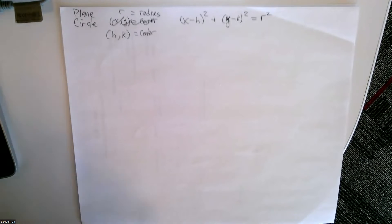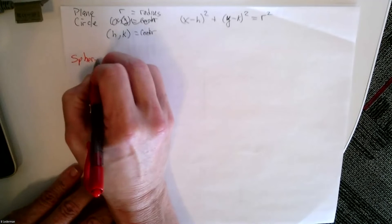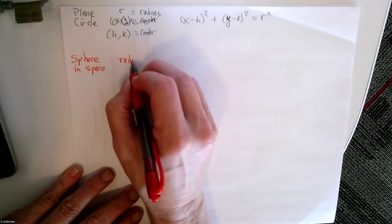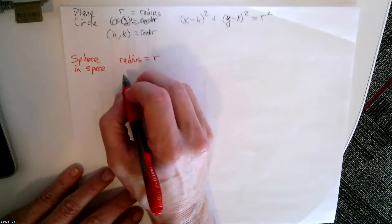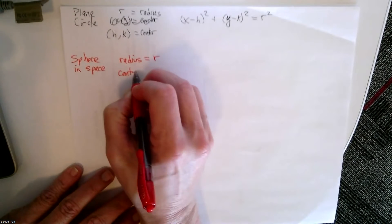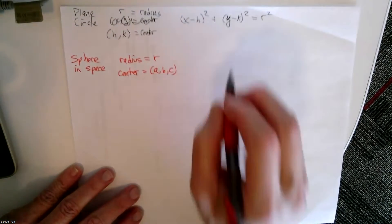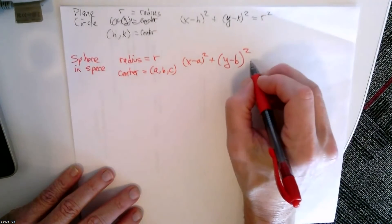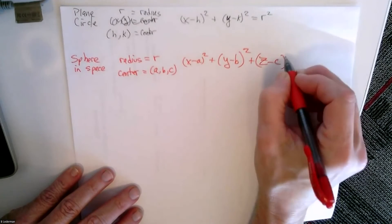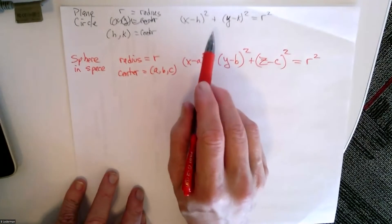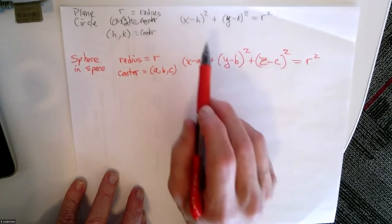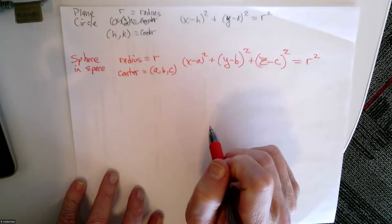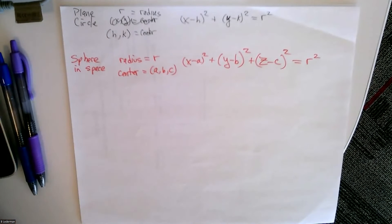The equivalent of a circle on the plane is a sphere in three dimensions. For a sphere in space with radius r and center (a, b, c), the equation is: x minus a squared plus y minus b squared plus z minus c squared equals r squared. It's an extension of the two-dimensional version.